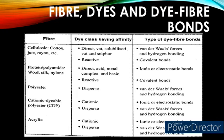If the same cellulosic fibers — cotton, jute, rayon — are dyed with reactive dyes, the bond formed is a covalent bond, which has the highest relative strength. Similarly, protein fibers like wool, silk, and nylon dyed using direct, acid, metal complex, and basic dyes will form an ionic or electrostatic bond. If those same protein fibers are dyed using reactive dyes, the dye-fiber bond formed is a covalent bond. Polyester dyed using disperse dyes will form van der Waals forces and hydrogen bonding.